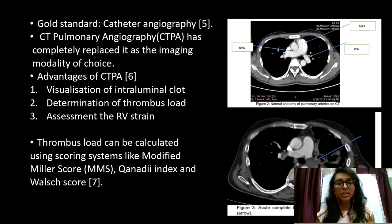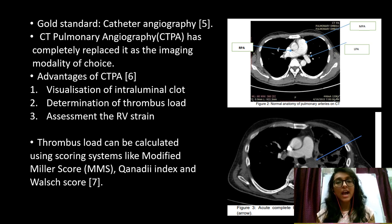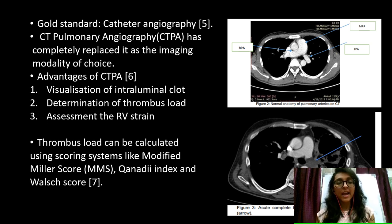The gold standard for diagnosis of pulmonary thromboembolism is catheter angiography. However, CTPA — CT pulmonary angiography — has become the investigation of choice due to its advantages: direct visualisation of the thrombus, ability to determine the thrombus load, and assessment of right ventricular strain. The thrombus load can be assessed using either the modified Miller score, the Kennedy index, or the VAL score.